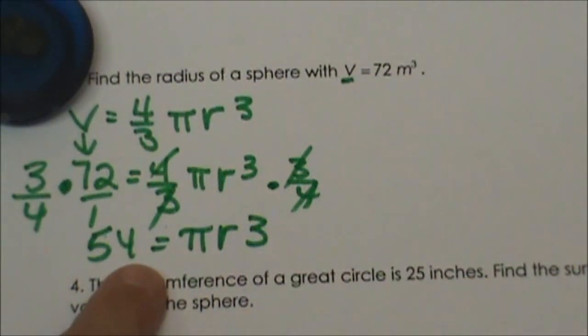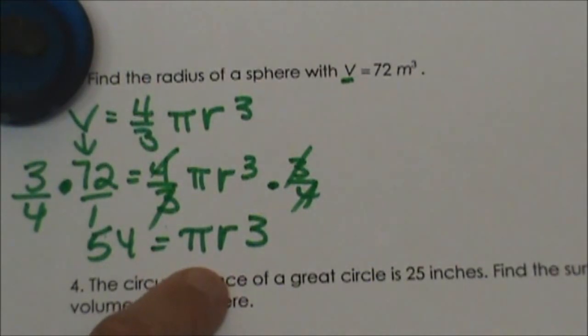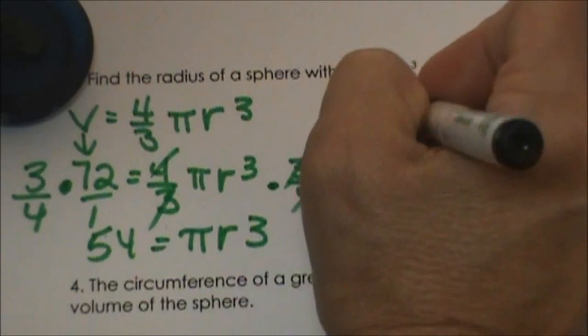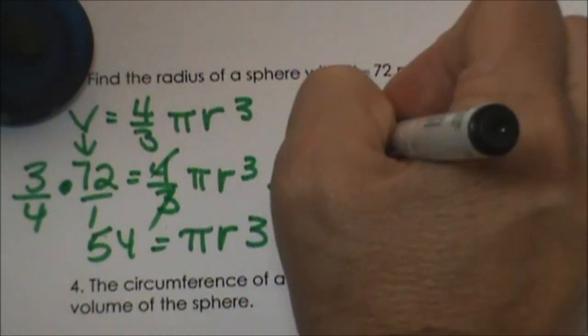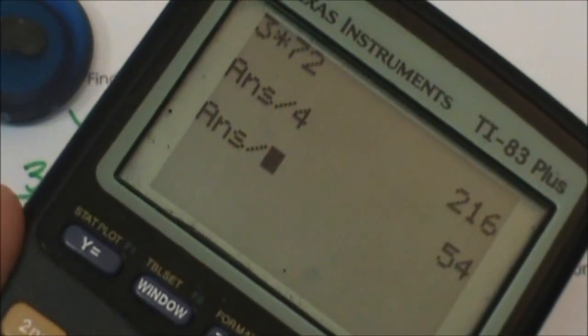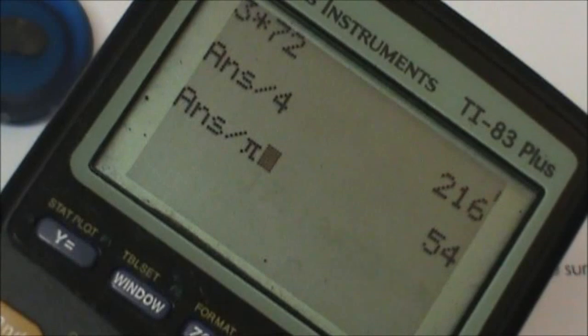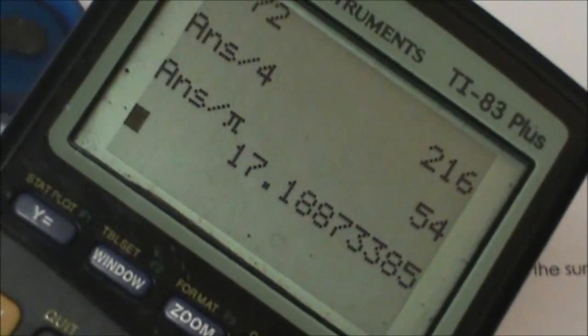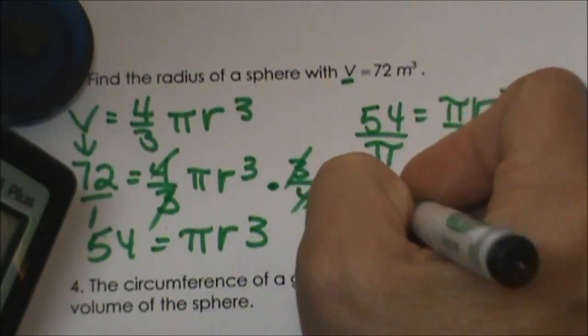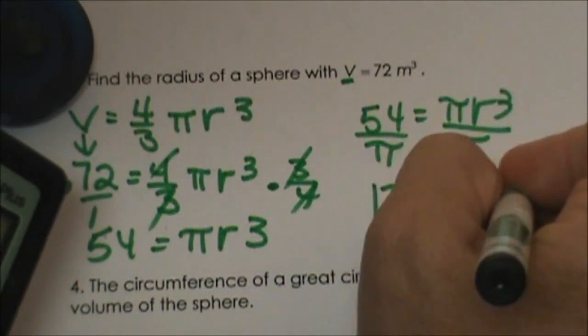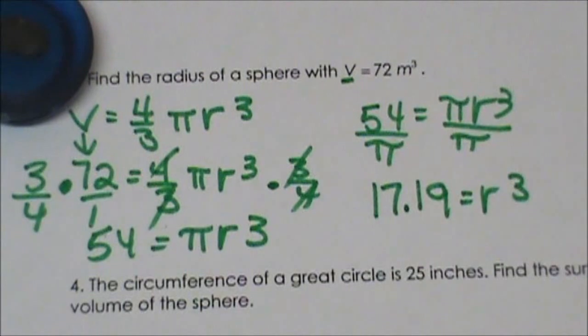We are getting closer. Now we need to get rid of pi and remember pi is just the number 3.1415 so we can just divide by that. We are going to take 54 and we are going to divide both sides by pi so I am going to take my 54 and I am going to divide by pi and I get 17.19 so 17.19 is equal to r cubed.